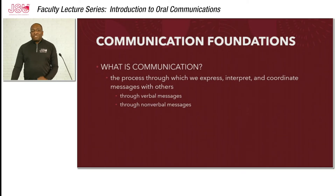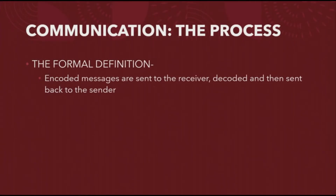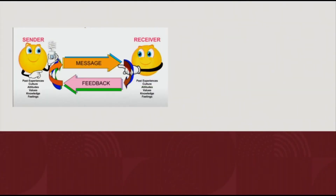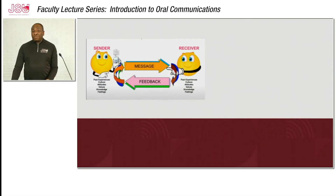Now, we can move on to the process of communication. The formal definition of the communication process tells us that encoded messages are sent to the receiver, decoded, and then sent back to the sender. When we look at a diagram which gives us a visual representation of this process, it becomes much easier to understand. As you can see here, the individual on the left, which is the sender, encodes messages and then sends it to the person on the right, which is the receiver. The receiver then decodes the message through a number of channels like past experiences, culture, attitudes, values, knowledge, feelings, and many others. Once that message is decoded, the receiver sends the message back to the sender and the sender carries out the same process as the receiver. This is a very complex process but takes place in just seconds and in most instances is completely automatic.